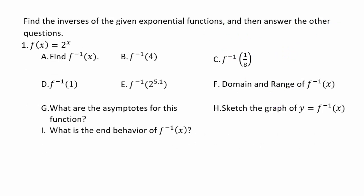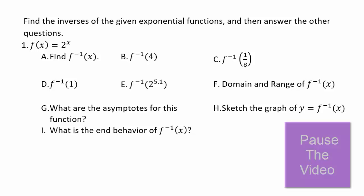Let's go back and study f of x equals 2 to the power x, and answer the following: find its inverse function, f inverse of 4, f inverse of 1 over 8, f inverse of 1, f inverse of 2 to the power 5.1, the domain and range of the inverse function, asymptotes of the inverse function, sketch the graph of the inverse function, and determine the end behavior. You already know how to graph 2 to the power x, so this will be good practice. Pause the video and see what you can do.